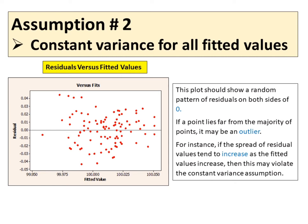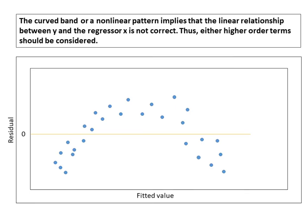If a point lies far from the majority of points, it may be an outlier. There should not be any recognizable patterns in the residual plot. For instance, if the spread of residual values tends to increase as the fitted values increase, then this may violate the constant variance assumption. The curved band or a non-linear pattern implies that the linear relationship between Y and the regressor X is not correct. Thus, either higher order terms should be considered.